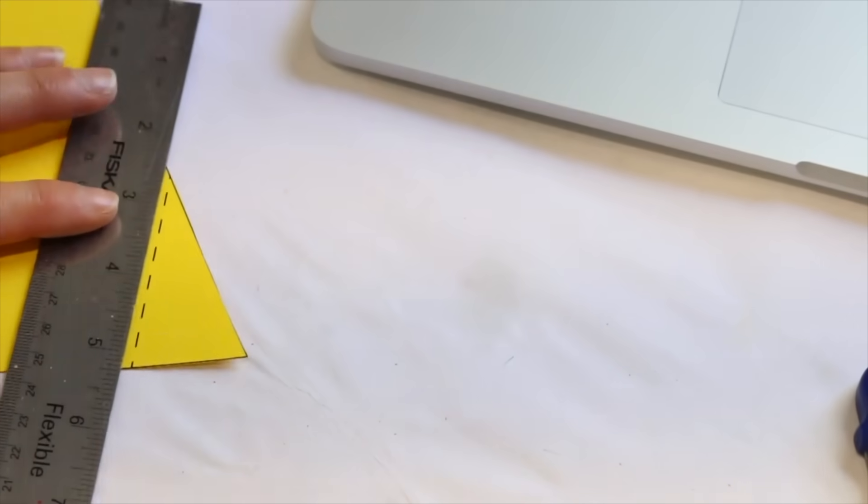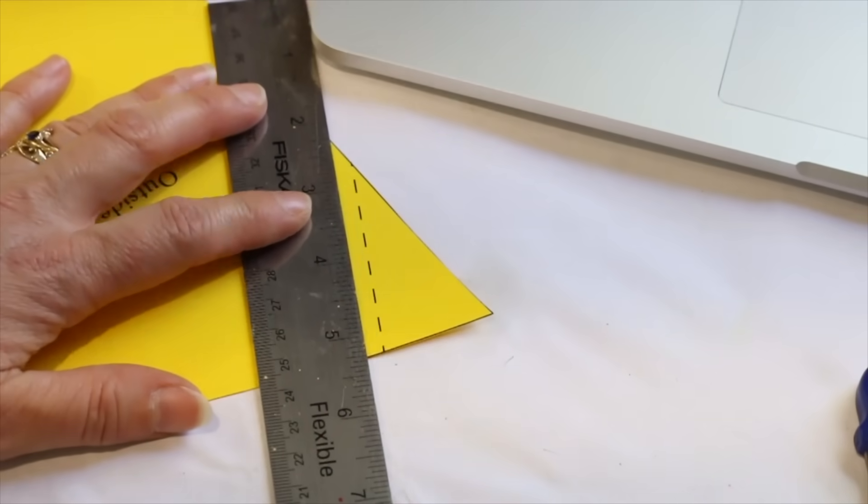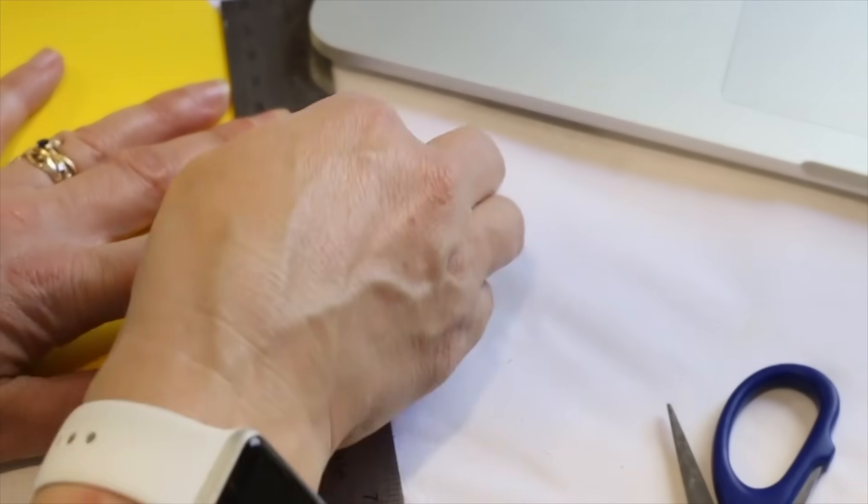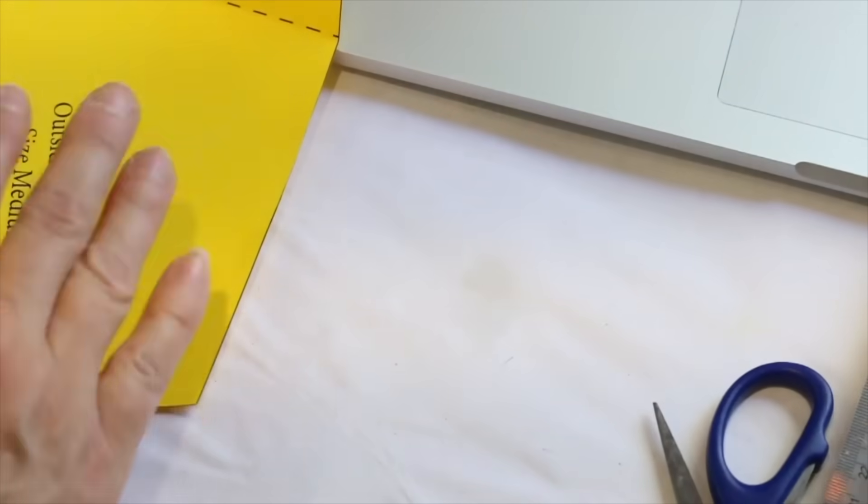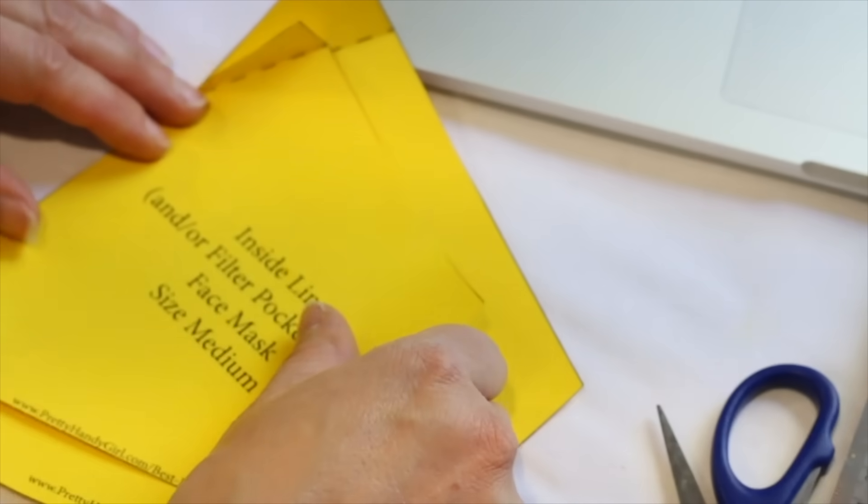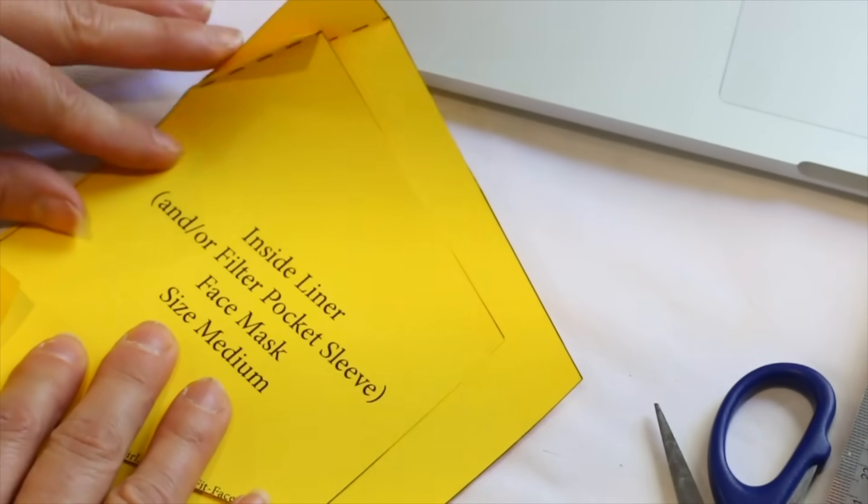Download and print out the templates. Make sure to print at actual size and check the size with the 1 inch box on the template. Links for the templates are in the description below or on my blog. Gently score and fold the two corners on the template.